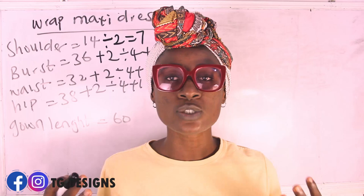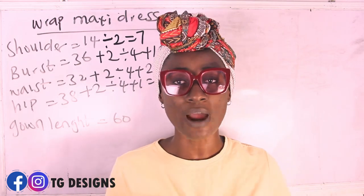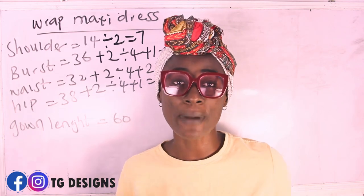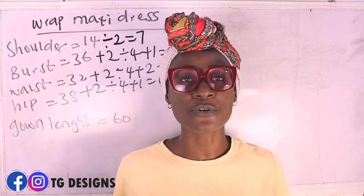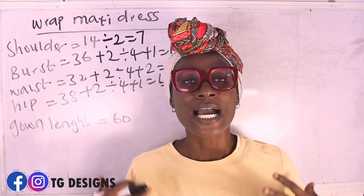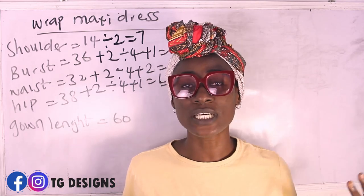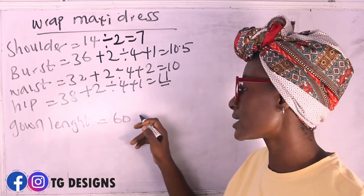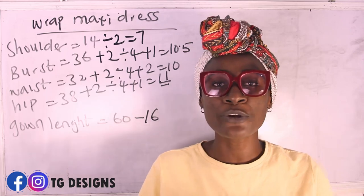What we want to achieve is a wrap gown — the upper part will have your wrap effect and the lower part will be your maxi dress. To get the upper part length, deduct your waistline measurement from your gown length. Your waist sits one inch above your navel button. From shoulder to waist I have 16 inches, so I'm going to deduct 16 from 60.